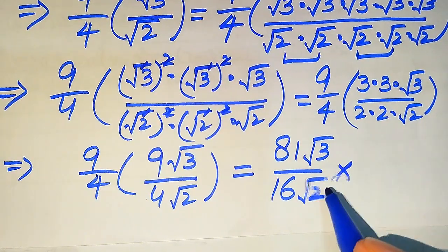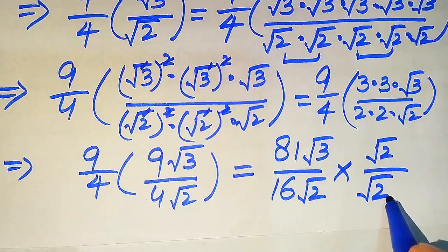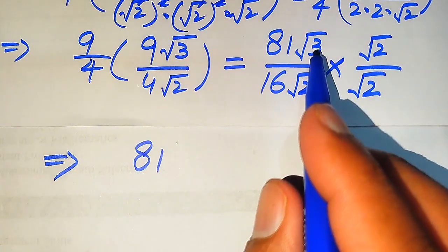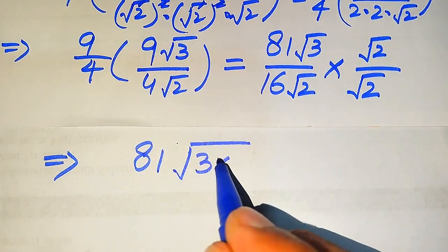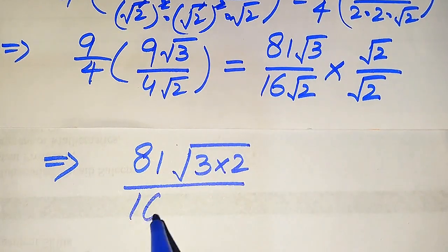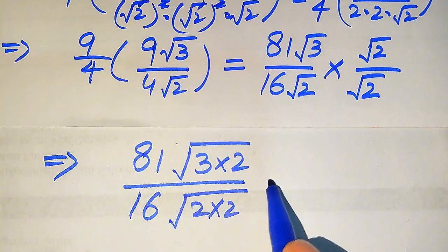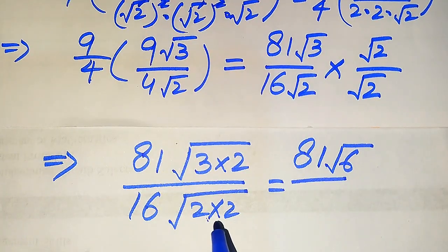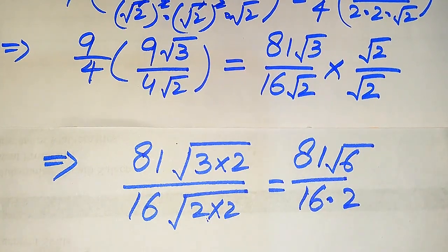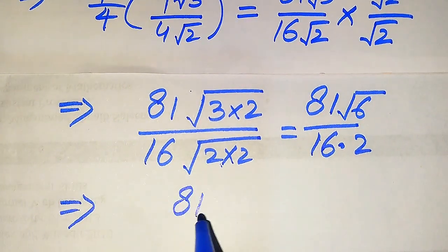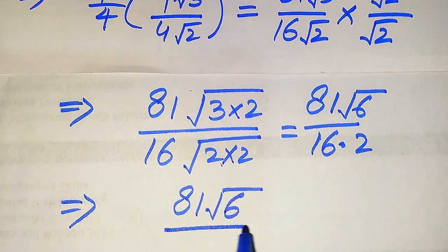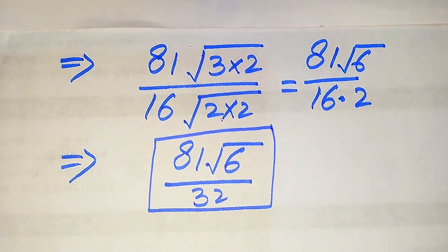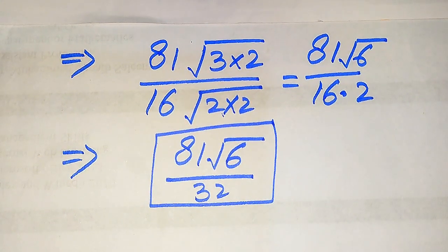We rationalize by multiplying and dividing by square root of 2. Combining the square roots gives √(3 times 2) = √6 in the numerator, and 16 times 2 = 32 in the denominator, since √2 · √2 = 2. The final simplified answer is 81 times √6 divided by 32. Thank you for watching — please subscribe for more videos.